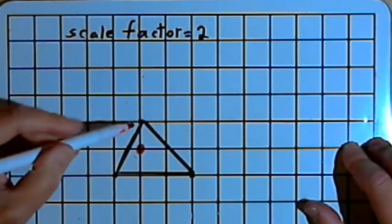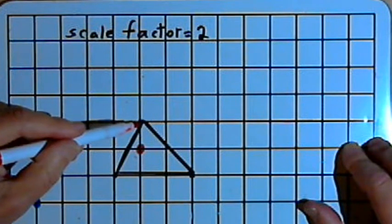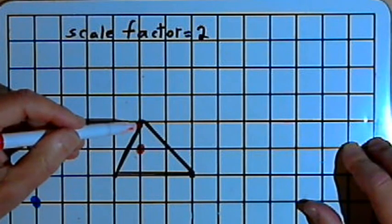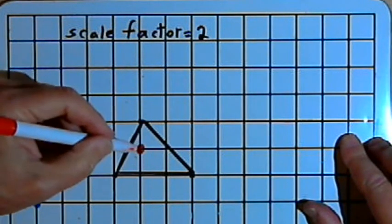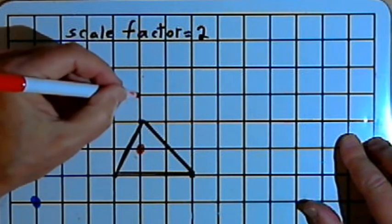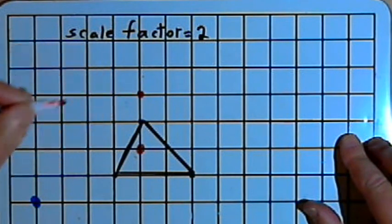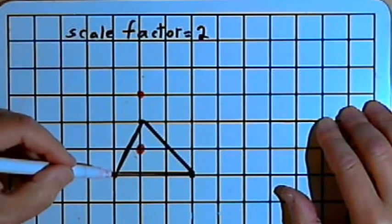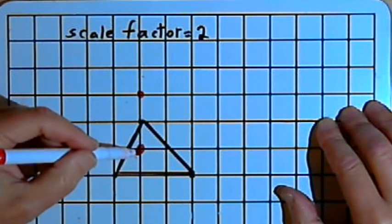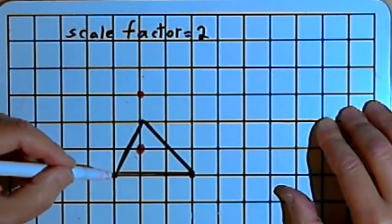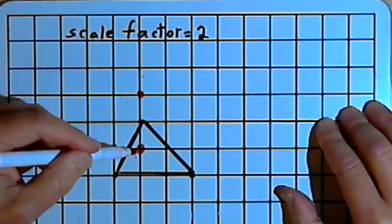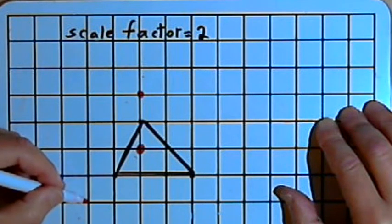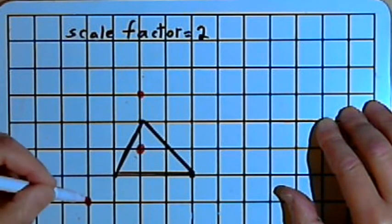To get the dilated image of this top angle of the triangle, I'll take the distance from the center of dilation to that angle — that's one unit — and I'll double it. So I'll go up two units from the center of dilation, and that'll give me the top angle of the dilated image. For this lower left angle, that's one unit down and one unit to the left of the center of dilation. So I want to double those distances — I'll go down two units and two units to the left, and now I've got that point.